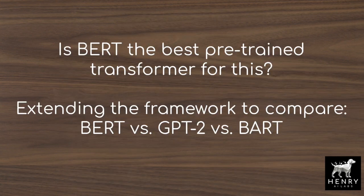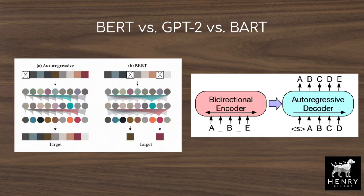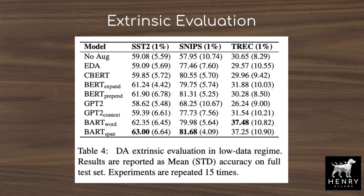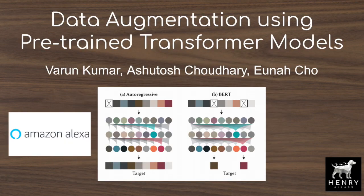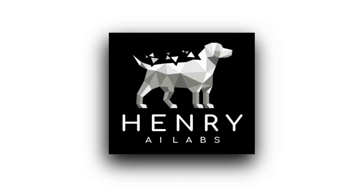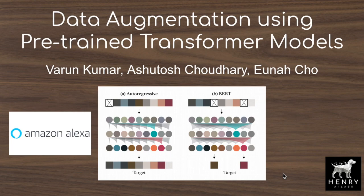These models show huge gains over not using any data augmentation or simple augmentations like synonym replacement. The authors explore which generative model is the best for this out of BERT, GPT-2, and BART. This video will explain data augmentation using pre-trained transformer models from researchers at Alexa AI.